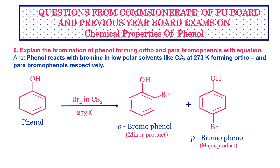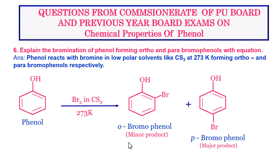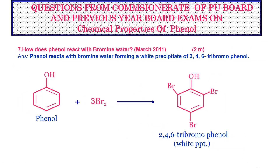Next question: explain the bromination of phenol forming ortho and para bromophenols with equation. Phenol reacts with bromine in low polar solvents like carbon disulfide at about 273 Kelvin (0°C), forming ortho and para bromophenols. The equation: C6H5OH + Br2 in presence of CS2 at 273 Kelvin gives orthobromophenol as the minor product and para bromophenol as the major product.